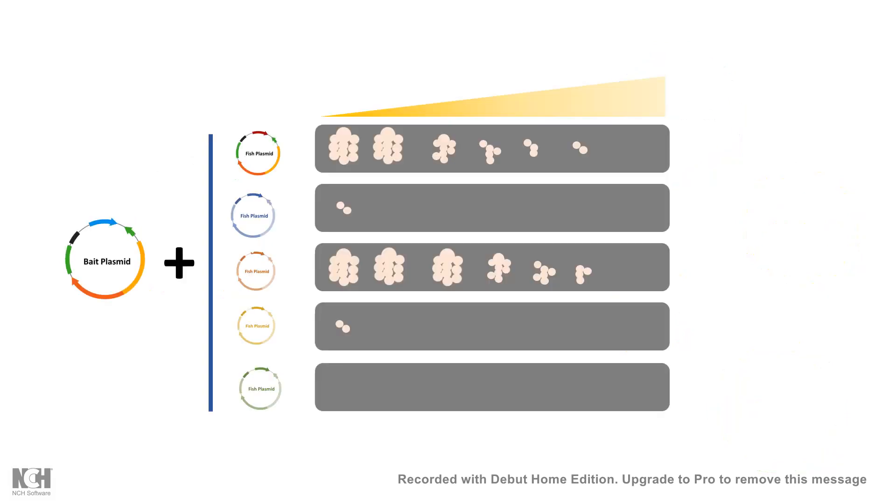Now the way we read out the data is we spot the yeast colonies according to dilution and try to understand where the colony has formed. If the colony has formed that means the gal gene, the histidine gene is transcribed and that in turn means the protein has interacted with each other which would give rise to the transcription. So in this particular situation you can see they are interacting with each other but other situations they are not interacting with each other and as a result you are not seeing any kind of colonies there. That is how we would understand two proteins are interacting with each other or not.